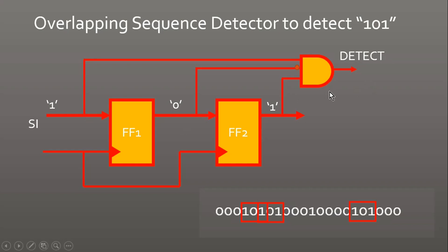But why was it overlapping? Let us say we detected 1, 0, and 1, and detect goes high. Now let us say again 0 comes and then 1 comes. The same case is shown here: 1 0 1 0 1 — in that case also we will get the detect signal going high, as shown in the figure. That is why we call it an overlapping type of sequence detector. But now in the non-overlapping type, I want detect to go high when I detect 101, and the second time it should go high only when I get a completely new 101 with no overlapping of the sequence.